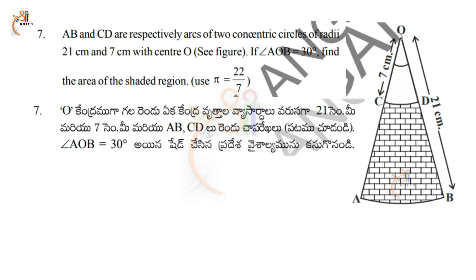Both circles are positioned at the same center point. Here OB has radius 21 centimeters, and OD has radius 7 centimeters. So here, both are at the same center point. This is a circle O, based on a circle rotation.